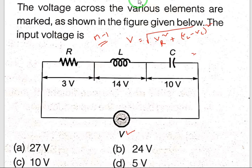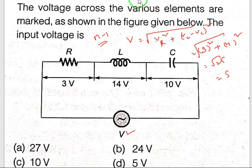V equals root over VR squared plus VL minus VC whole square. VR is 3, so 3 squared plus VL minus VC is 14 minus 10, that is 4, whole squared. So 9 plus 16, that is root 25, you will get 5 as the answer — 5 volts. This is the correct answer by method one.